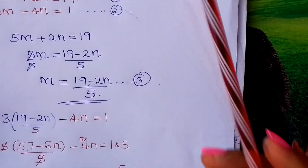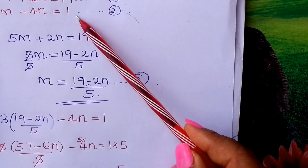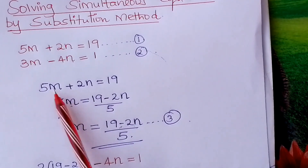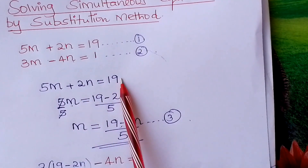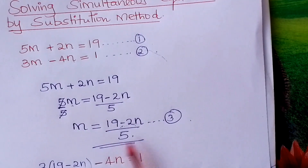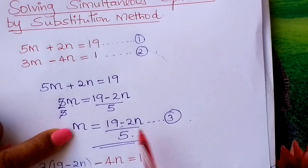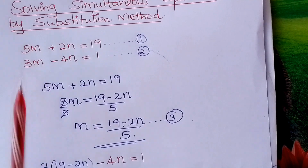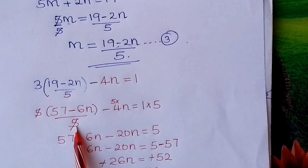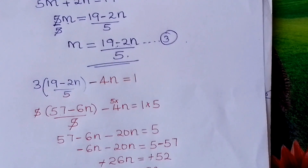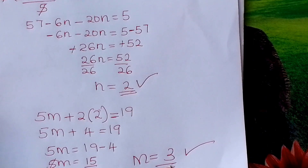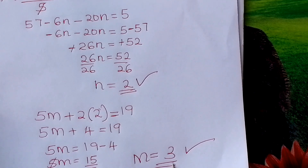Good. So learners, go and practice on how to solve simultaneous equations by substitution method. You take either the first or second equation, make a letter the subject of the formula, substitute into the other equation, remove the denominator by multiplying by 5, flow down to get n equals 2, then substitute to get m equals 3. Thank you. God bless you.